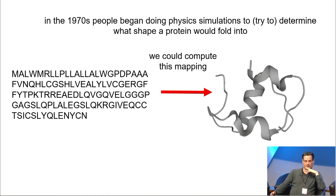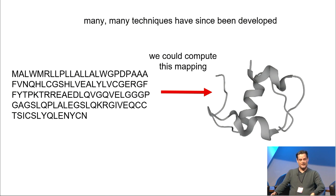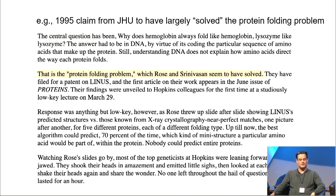In the 1970s, people began doing physics simulations to try to determine what shape a protein would fold into from the amino acid sequence. And many, many techniques have since been developed. Some come more out of physics and some more out of biology, sort of evolutionary approaches. A problem, very similar to many studies by people here, is that it's very easy to fool yourself if you're a modeler. It's very easy to cherry-pick results and to convince yourself that your systems are better than they actually are.